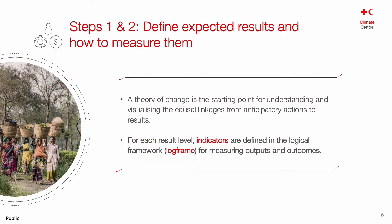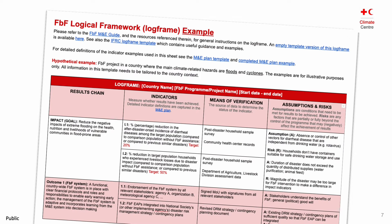For each result level in our theory of change, we can define indicators in the logical framework, or log frame, for measuring outputs, outcomes, and impact. This is a hypothetical example of a logical framework that has already been populated — the link to which you can find in the FBF manual. The log frame follows a simple structure: on the left you have the results chain defining impacts, outcomes, and outputs. To each level of result, you have one or more indicators defined, as well as data sources and any assumptions or risks to be aware of.